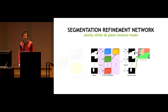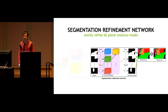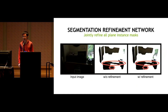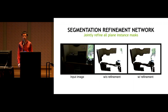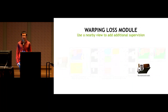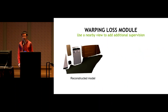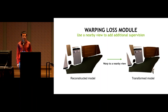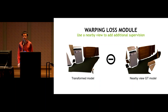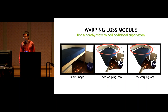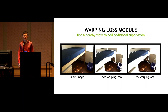Supervision for the refinement is generated on-the-fly by matching ground truth masks with predictions. The refinement closes gaps between segments. Finally, we have the warping loss module: if the reconstructed model is perfect, it should look perfect from any other view. We transform the model to a nearby view and compare against the ground truth at that view, improving geometry accuracy.